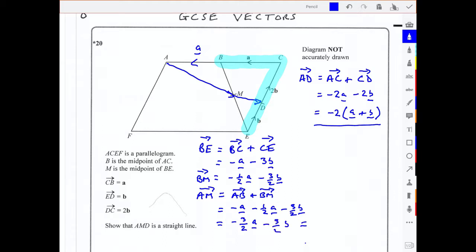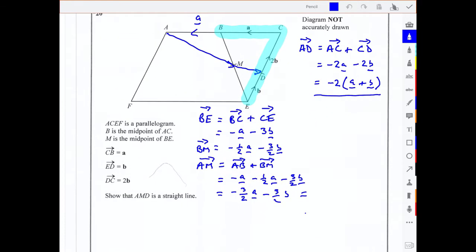Now this time I'm going to take out a common factor of minus 3 over 2, and in the bracket we'll have a plus b. Minus 3 over 2 times a gives you the minus 3 over 2a, and minus 3 over 2 times b or plus b gives you the minus 3 over 2b. And now we can see, if I put AM at the front there to remind us, we can see that AM is minus 3 over 2 times a plus b, and AD is minus 2 lots of a plus b.